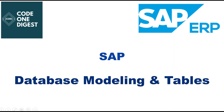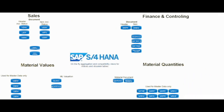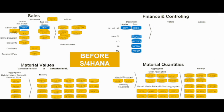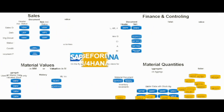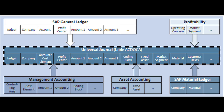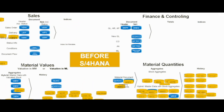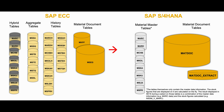Third, Database Modeling and Table Structure. SAP S4 HANA features a simplified and more efficient data model compared to SAP ECC. SAP ECC has a complex data model with numerous aggregate tables and indices, which was necessary to improve performance on traditional databases. SAP S4 HANA introduces the Universal Journal, which combines data from different financial and controlling modules like FI and CO into a single line-item table, eliminating the need for many aggregate and index tables and reducing data redundancy while improving data consistency.